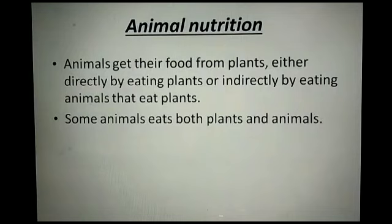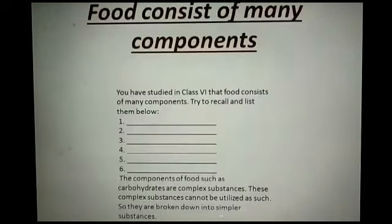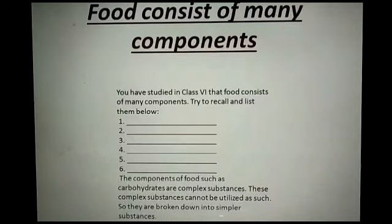Some animals eat both plants and animals. Food is compulsory for all living organisms for growth, development, and energy for doing various activities. You studied in class 6 that food consists of many components. Try to recall and list them.